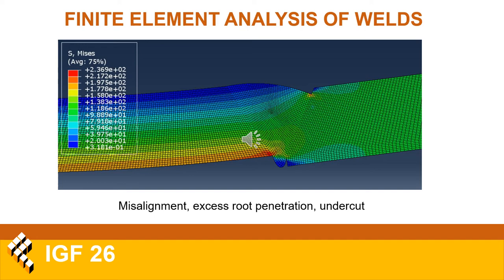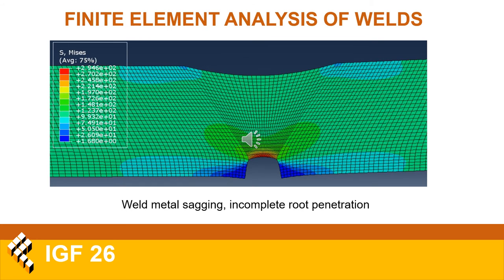A small stress concentration can also be observed at the other sharp angle present in the weld joint geometry — the undercut located on the weld face side. Finally, this is the model with weld metal sagging and incomplete root penetration. Stress distribution is similar to the other case with no misalignments, and due to the symmetrical geometry of the model, stress distribution is rather uniform, focused mostly in the weld root.